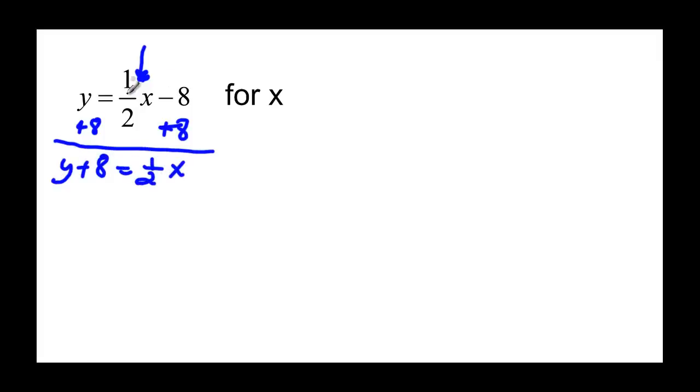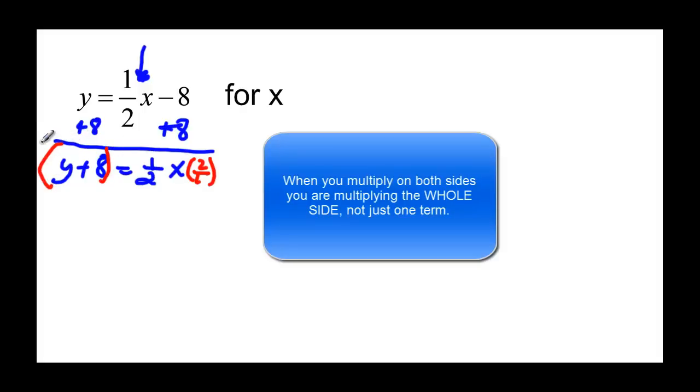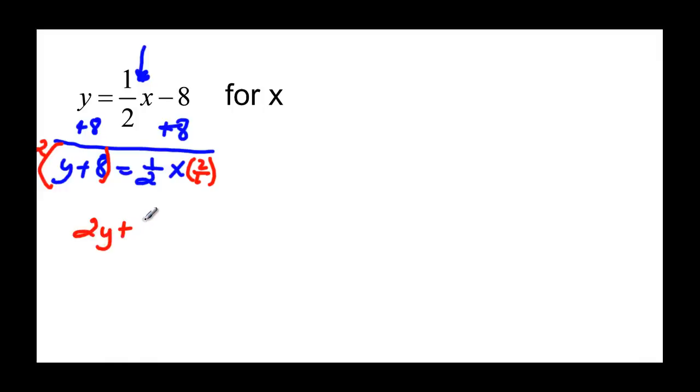Now we had a fraction here and last time we cleared the fraction. But this time since I just had one term with a fraction in it I could just work with it and see what happens. So I have this one half x. It's being multiplied by x. So that means I need to multiply both sides by two over one. And that means both whole sides have to be multiplied by two. So I have two y plus sixteen when I distribute my two. And that's going to be equal to the two over two becomes a one and I just have x.